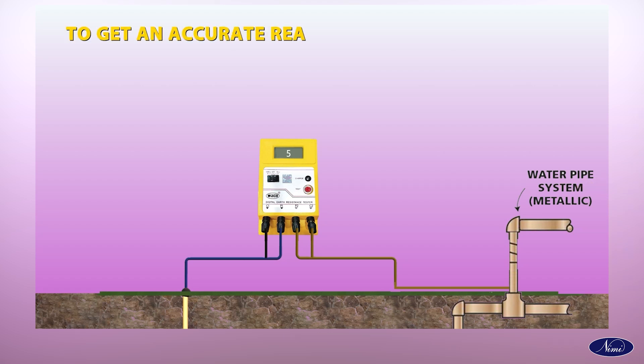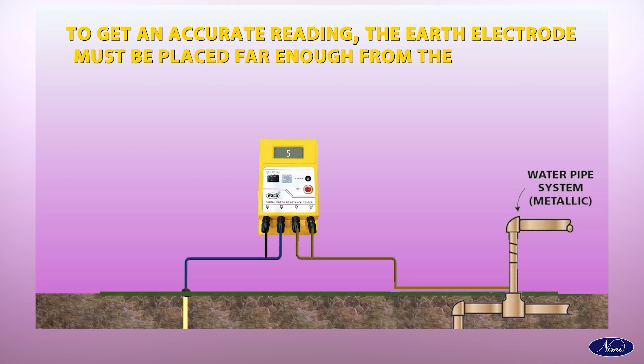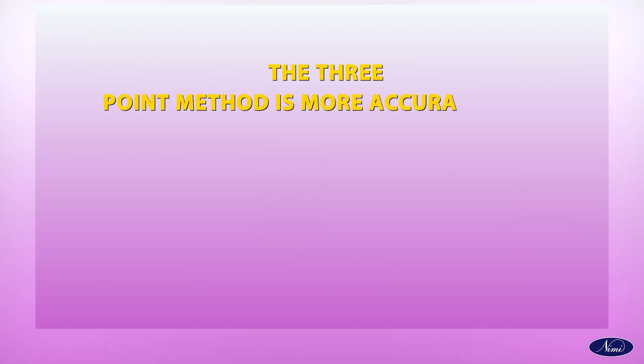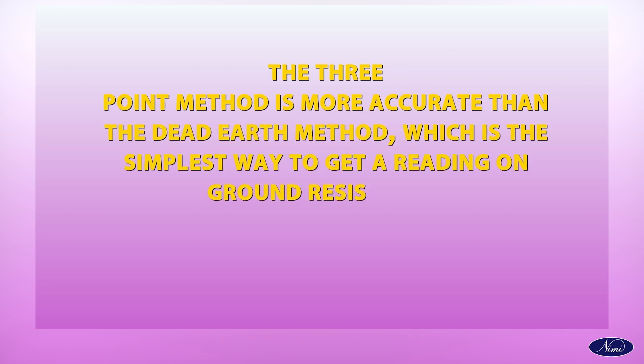To get an accurate reading, the earth electrode must be placed far enough from the second grounding point to be outside of its field of influence. The three-point method is more accurate than the dead-earth method, which is the simplest way to get a reading on ground resistance.